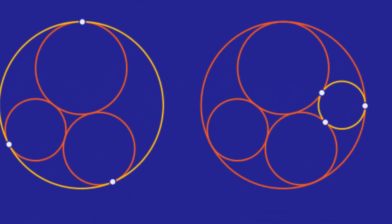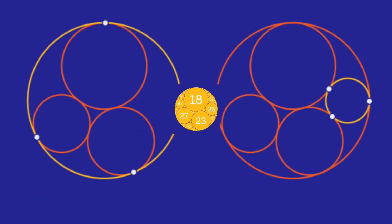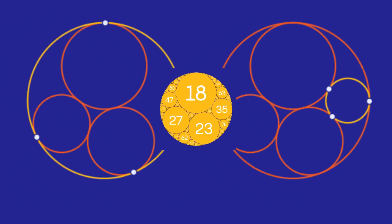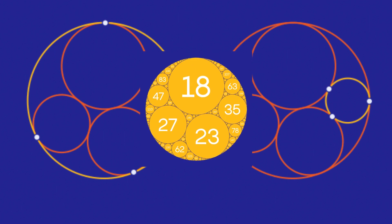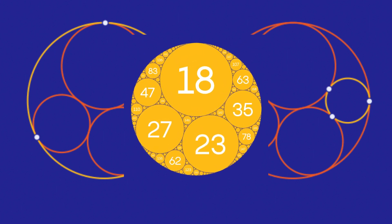Mathematicians use curvature, which is the reciprocal of the radius, to analyze these circles. As circles decrease in size, their curvature increases.